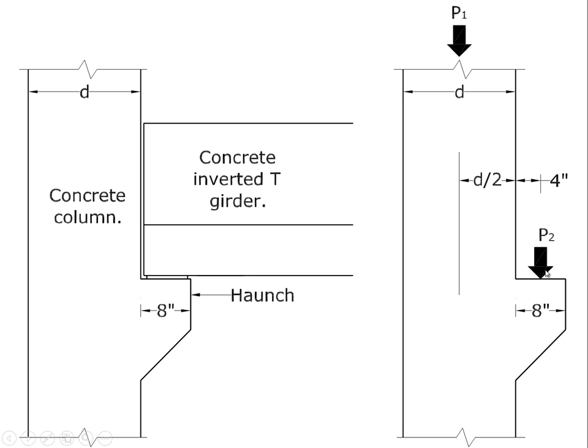And then we have this offset load P2, which is whatever load is being delivered by this concrete inverted T girder. This force is not delivered axially. As a consequence, there's a very large moment which is being delivered to this vertical element.